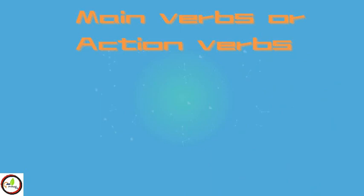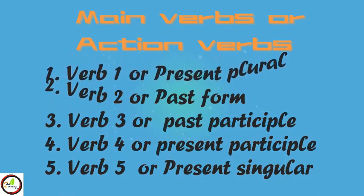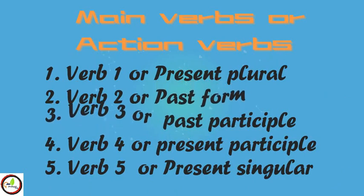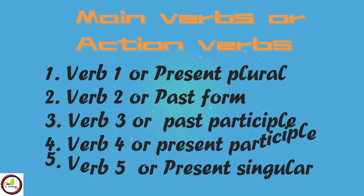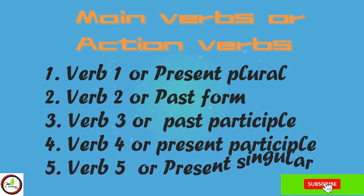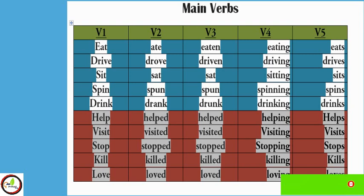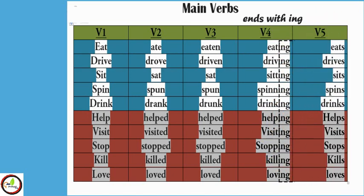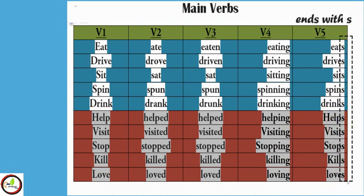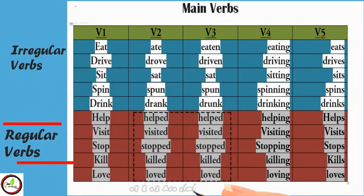The five forms are: Verb 1 or present plural, Verb 2 or past form, Verb 3 or past participle, Verb 4 or present participle, and Verb 5 or present singular. Here is a table showing examples of some main verbs — eat, ate, eaten, eating, eats; drive, drove, driven, driving, drives. Please note that Verb 4 usually ends with -ing and Verb 5 ends with -s.